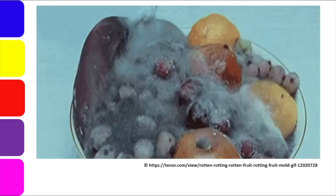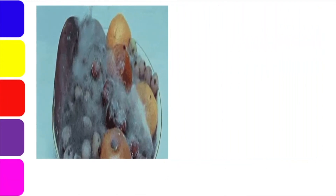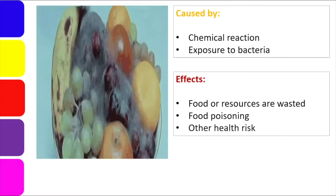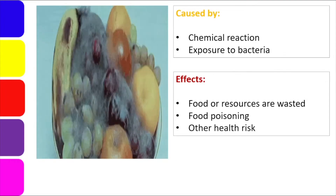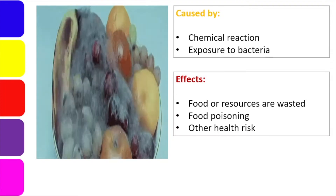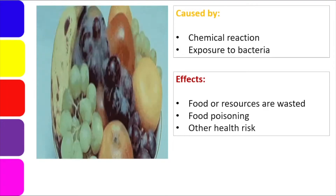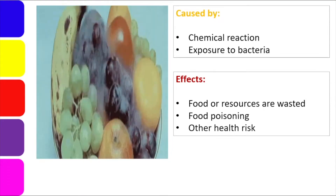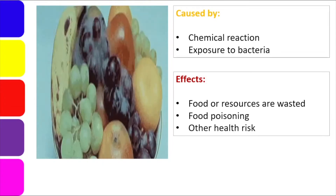Our last example of a negative change is what we call spoilage — the rotting or deterioration of our food. Of course, that is also a change in matter but a negative one. The causes of spoilage are chemical reactions, since food can change when its contents undergo a chemical reaction with external chemicals; and also exposure to bacteria, which causes our food to spoil. The effects of this type of change are: food or resources are wasted — our food supply is turned into garbage because it spoiled; and it will cause food poisoning and other health risks to those who eat it.